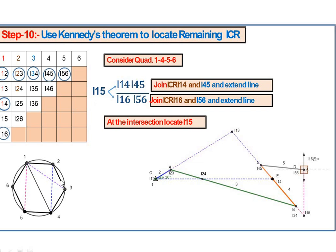To locate I15, join points 1 and 5. On one side use I16 and I56, and on the other side use I14 and I45. Since I16 is at infinity (slider), draw a line parallel to the slider path from I56. Extend the line through I14 and I45 downward. Their intersection gives ICR I15.